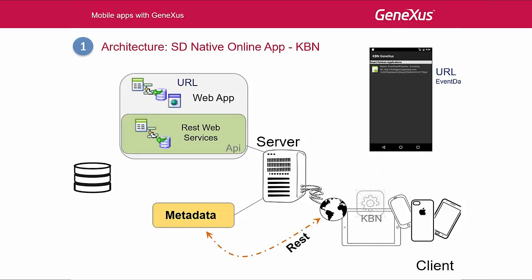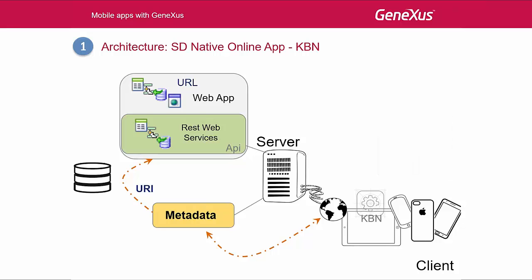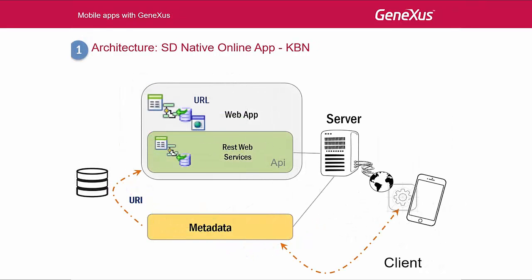For example, in the metadata, it reads that it must begin by the EventDay dashboard, which has certain images, a certain interface, layout, and certain options. It builds the interface and displays it on the device. When the client taps on an option, it contains the URI or URL from the metadata to run the resource. In the example, countries — a data provider that returns the list of countries by querying the database. The KBN runs it via HTTP, REST, and in this way, it accesses the database to obtain the collection of countries in a JSON. This JSON is returned as a response to the KBN, which, after accessing the metadata, has everything necessary to build the screen displayed to the user on the device.